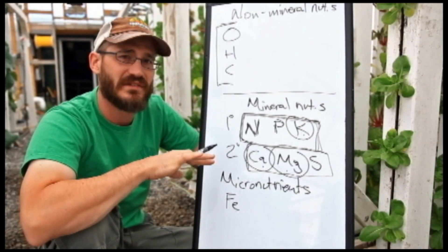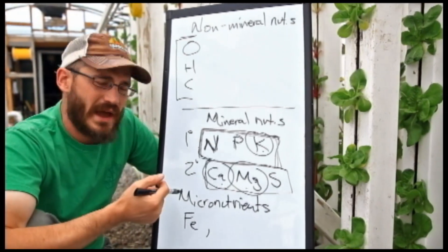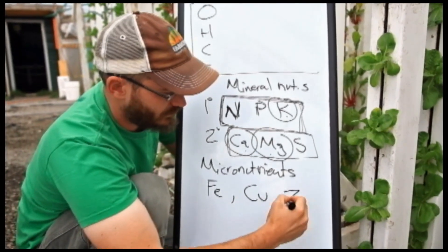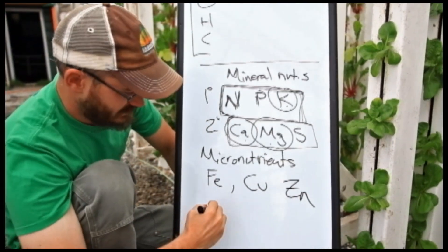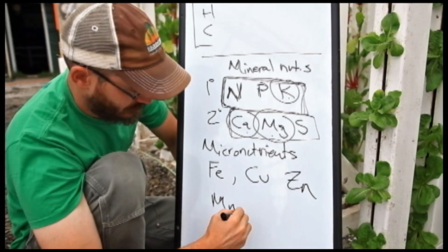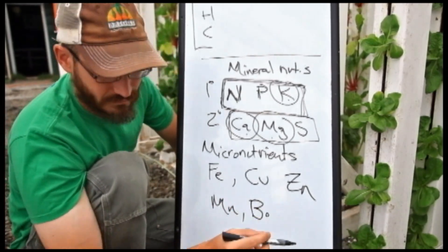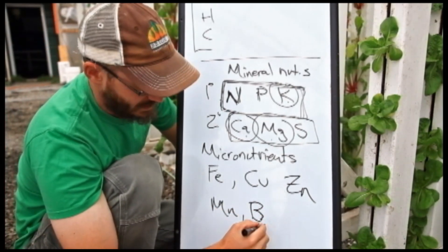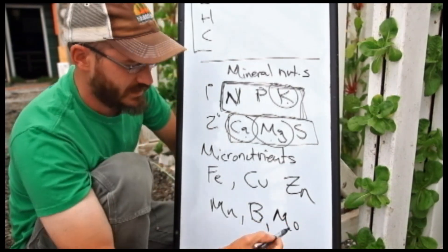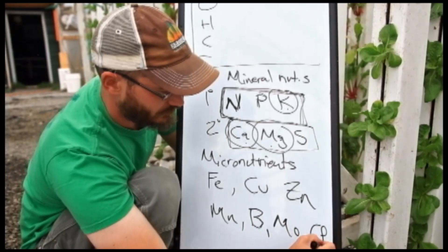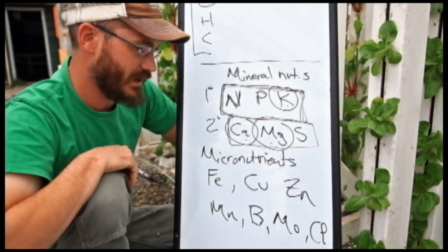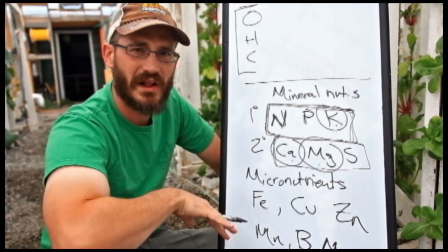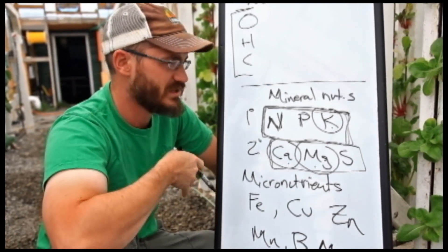Other micronutrients include copper, zinc, manganese, boron, and molybdenum. And most recently, chloride. So we're going to discuss these micronutrients as well as we kind of get into this subject of plant nutrients.